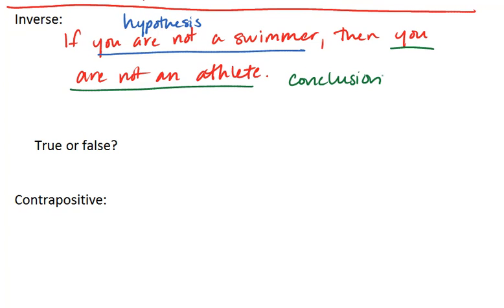We can see that it doesn't necessarily mean that you are not an athlete. If someone is not a swimmer, they can be a runner, they can be a football player, they can be a soccer player. And that would mean that they are still an athlete. So the inverse is also false.